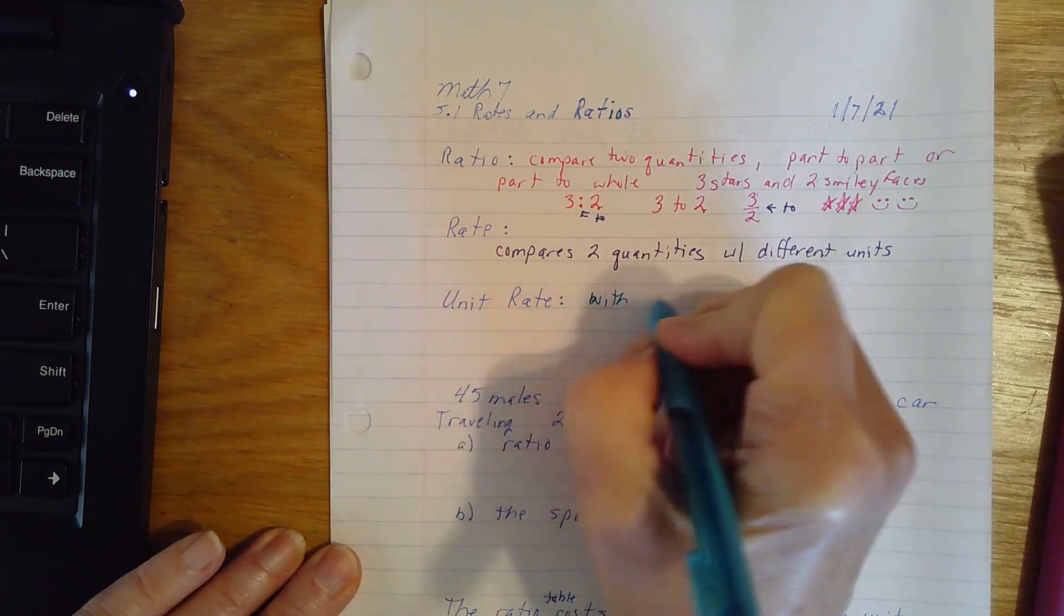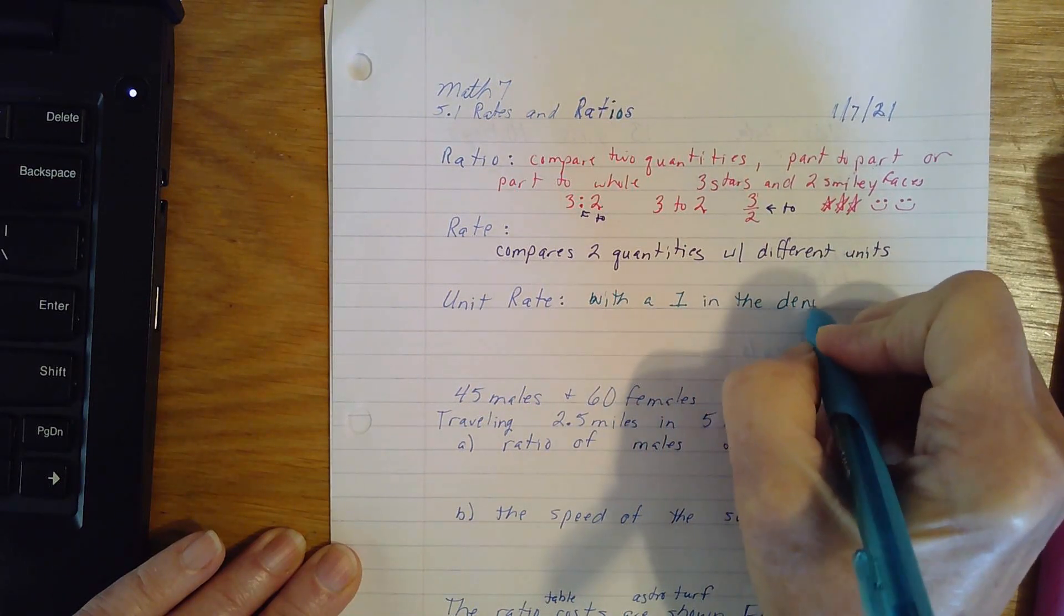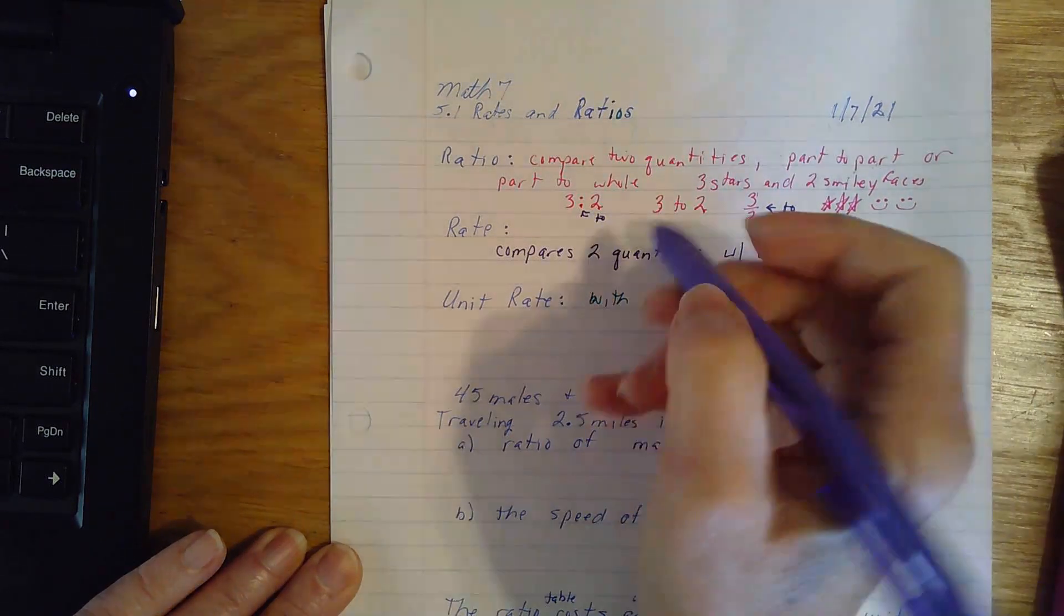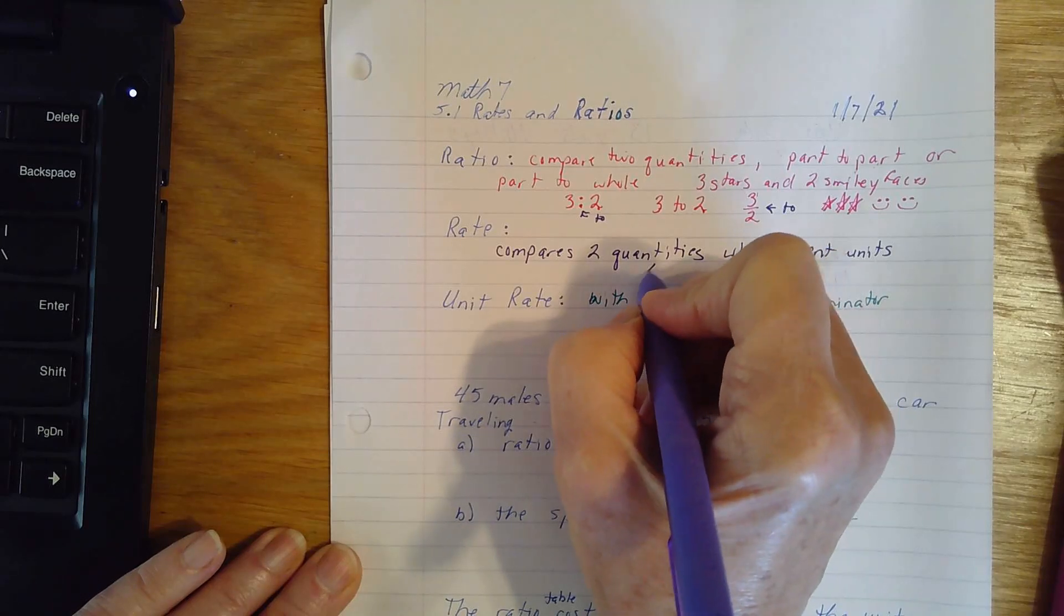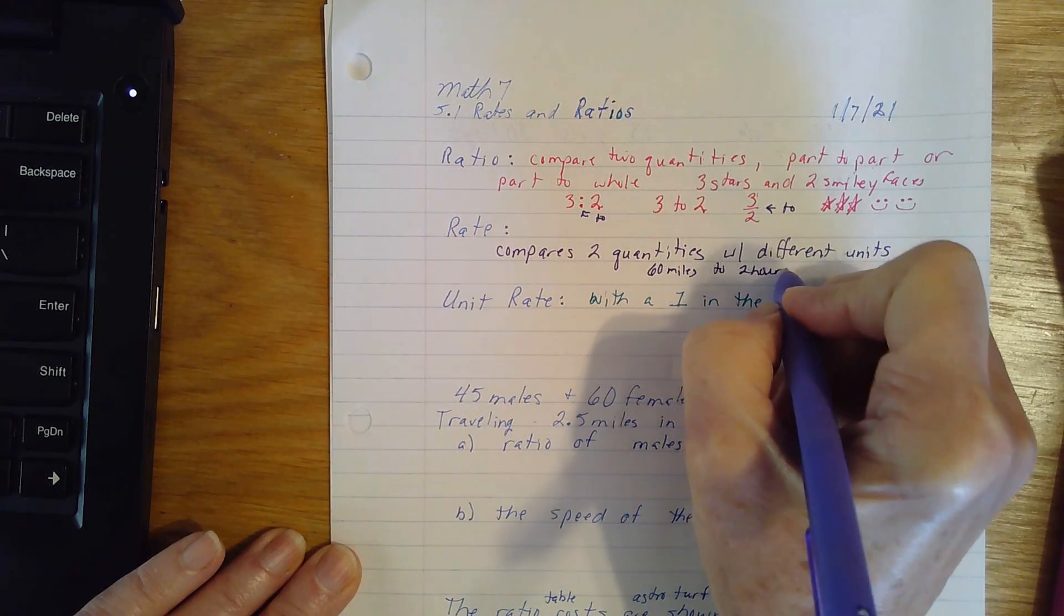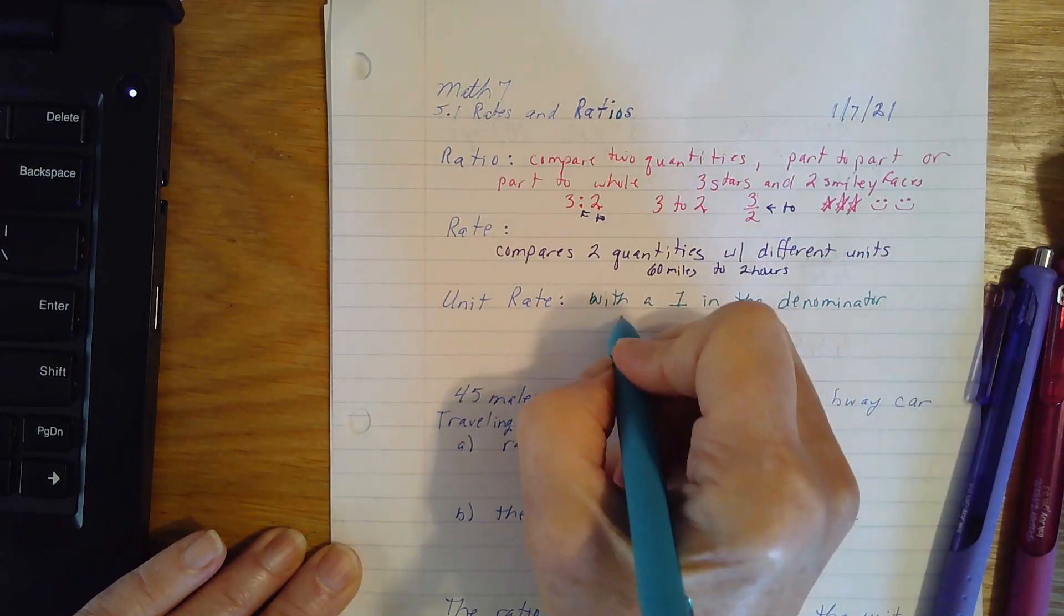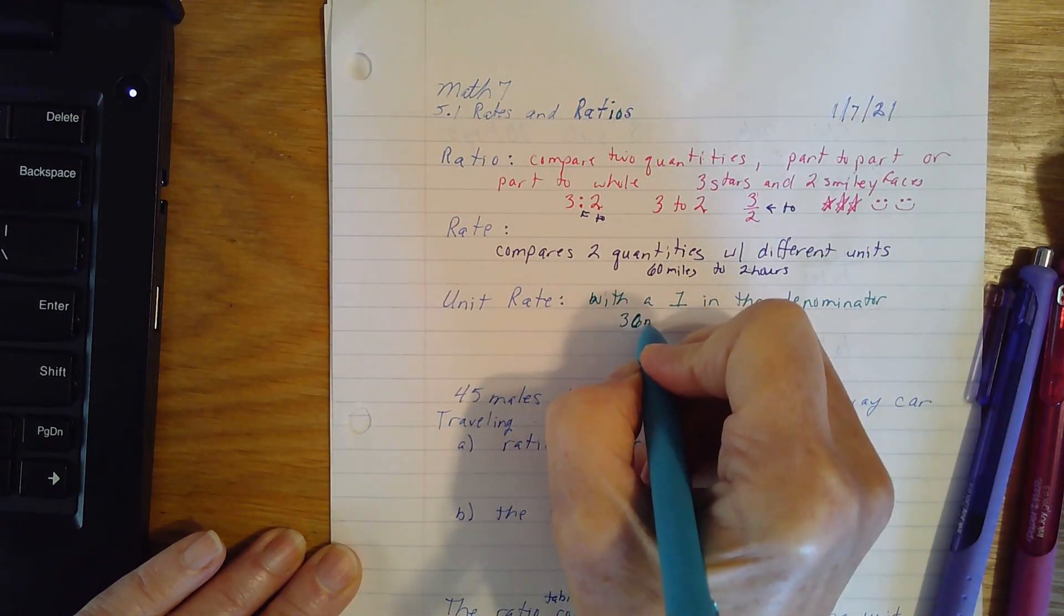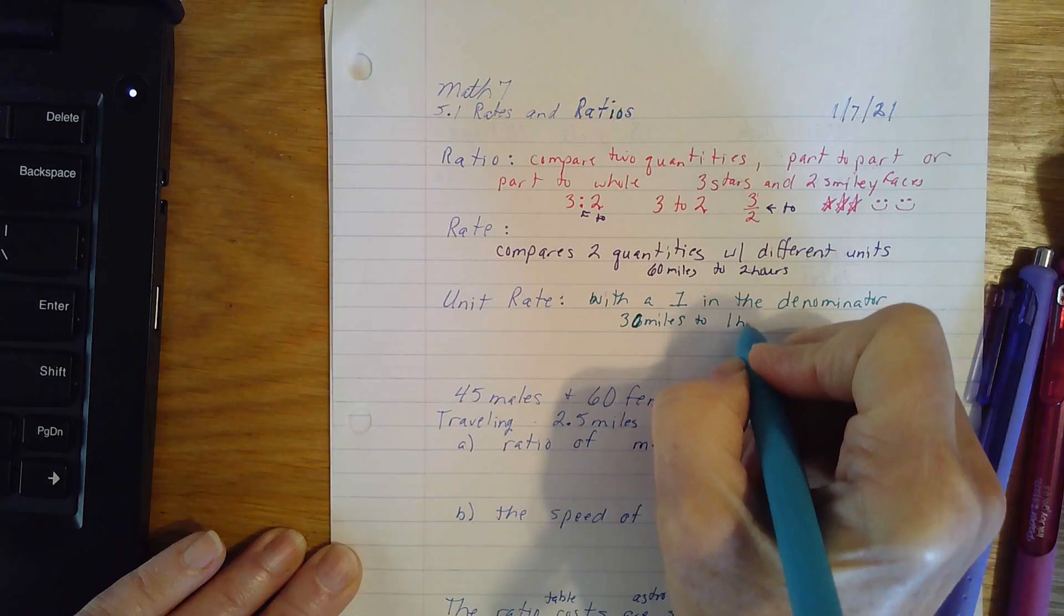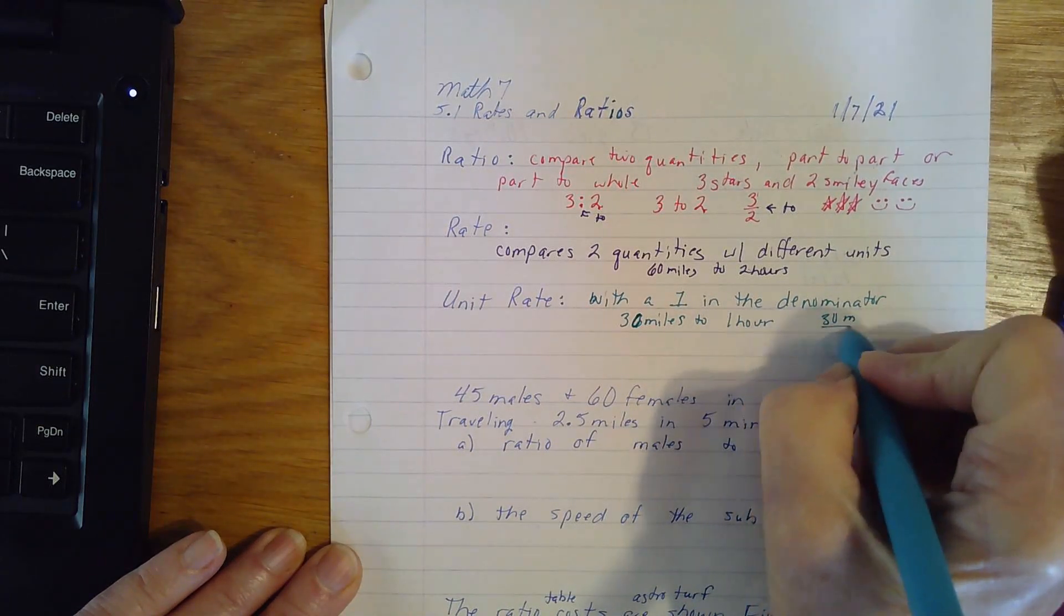Two quantities with different units with a one in the denominator. So I'm going to go back up here. So this would be comparing 60 miles to 2 hours. Different units. This one would be comparing 30 miles to 1 hour.